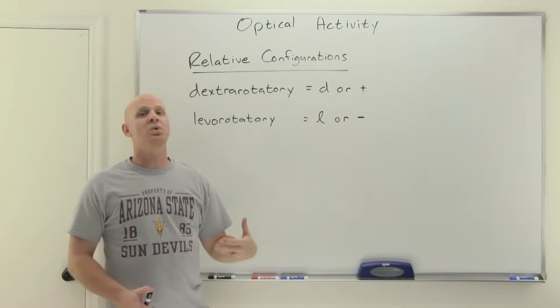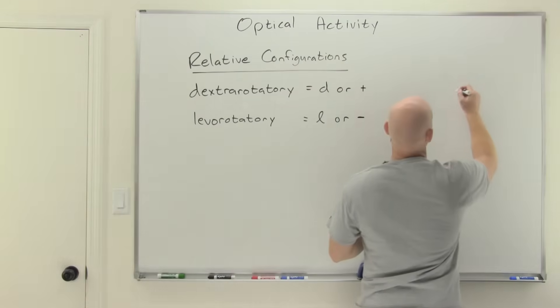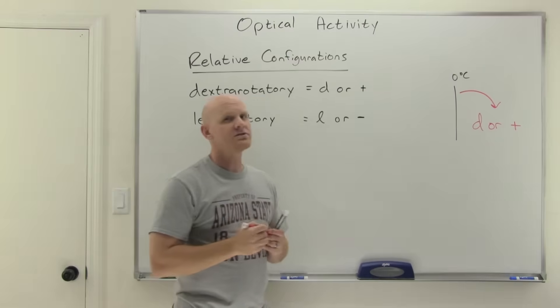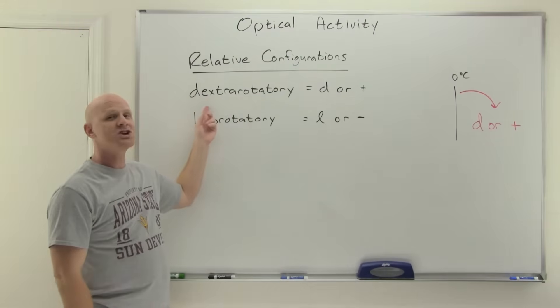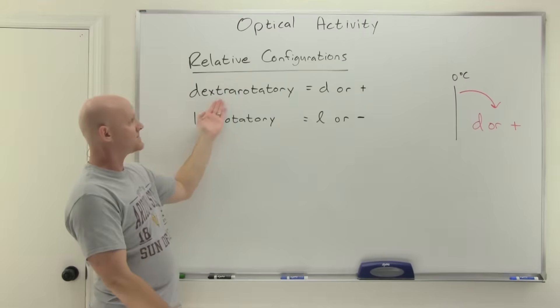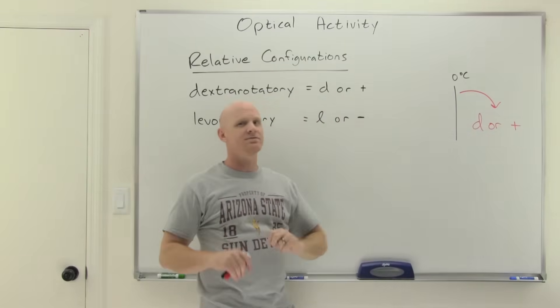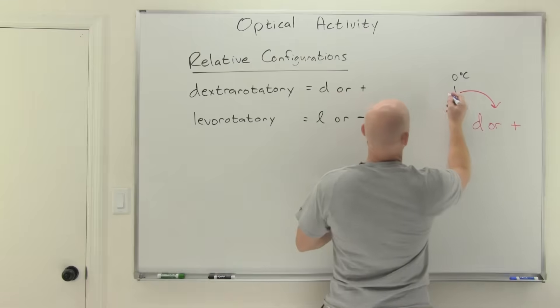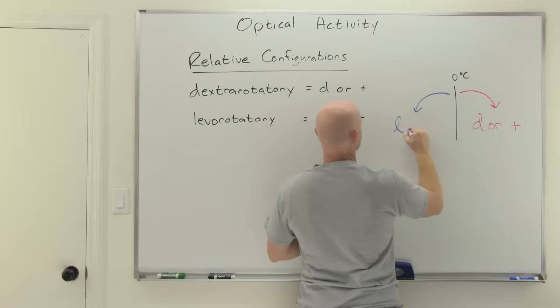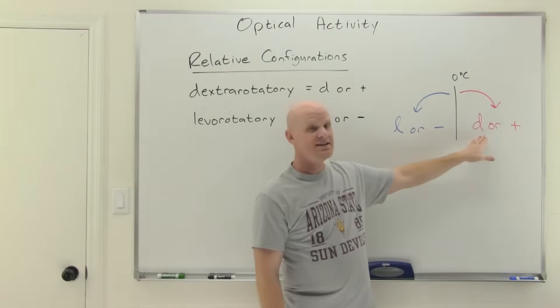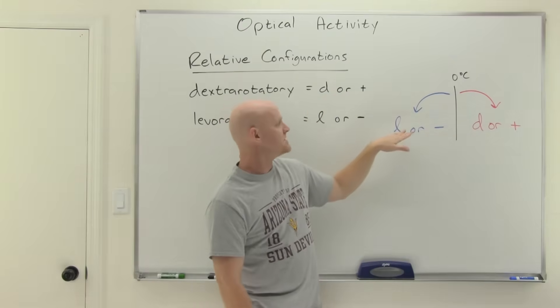So not true for what we're going to call relative configurations. And these relative configurations deal with which way they rotate plane polarized light. So let's say we've got light here and we're going to put it on the vertical here at zero degrees. And that light is going to get rotated in one of two directions. If it gets rotated off to the right, then we either call it D or plus. Both designations for this relative configuration. And the D here stands for dextrorotatory, which just simply means right rotating. Now, on the other hand, if the light gets rotated to the left, then we're either going to call it L or minus.